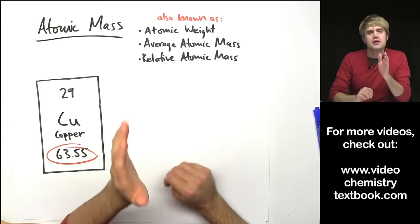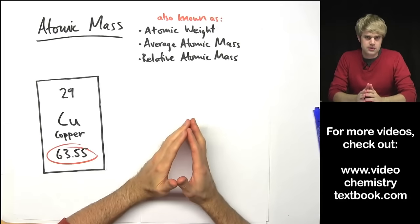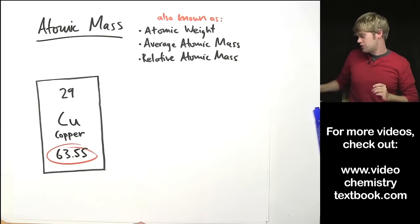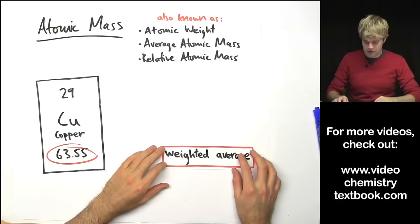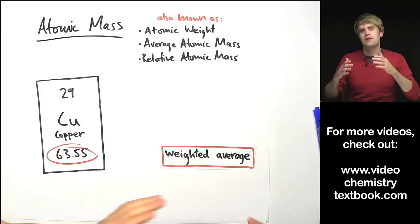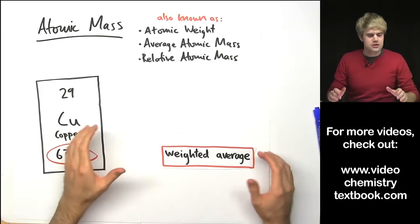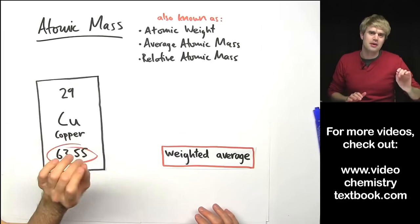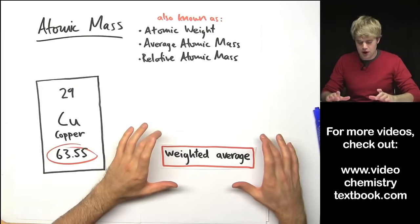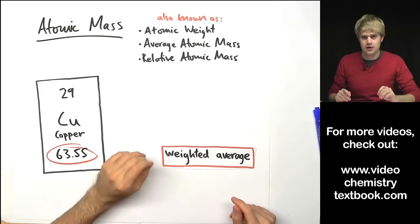Now atomic mass is an average. It's an average of the masses of a number of different atoms but it's a special kind of average. It's a special kind of average called a weighted average and this is different than the kind of average that you've probably already learned in math. So in order to talk about and really understand atomic mass we first have to understand weighted averages. What they are and how to calculate them.